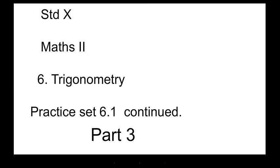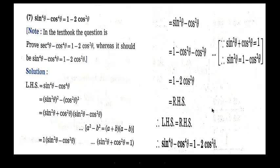Welcome back students. We continue with our Maths 2 Trigonometry, practice set 6.1. The 7th sum: sin raised to 4 theta minus cos raised to 4 theta is equal to 1 minus 2 cos square theta.